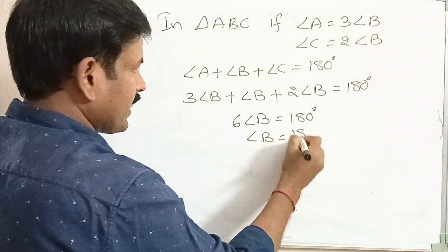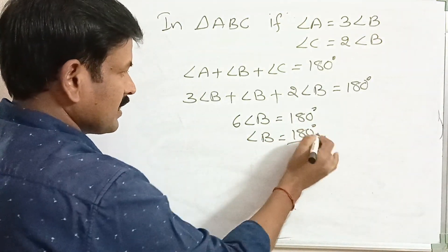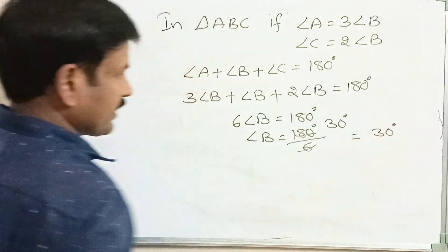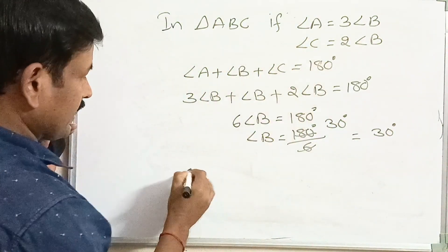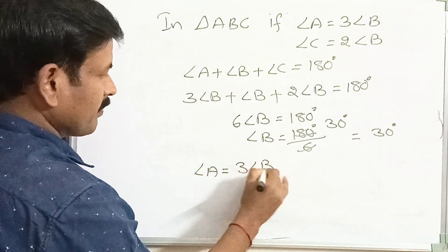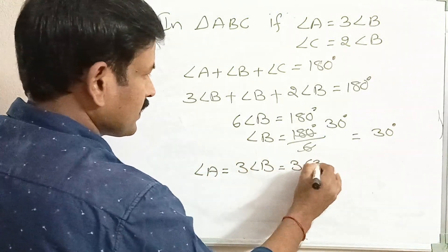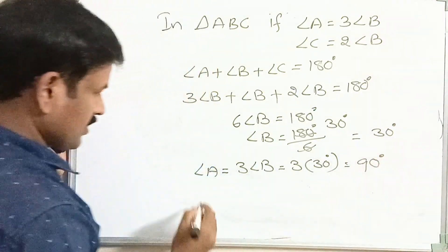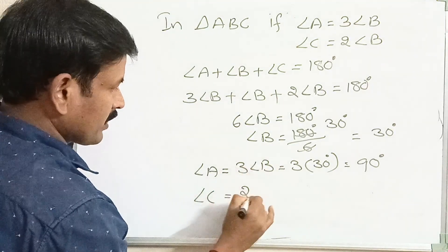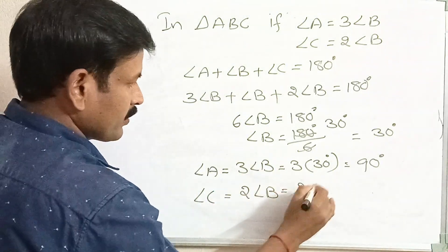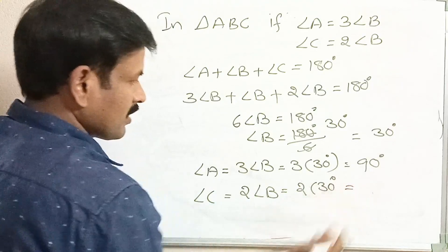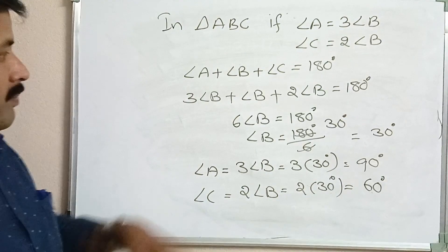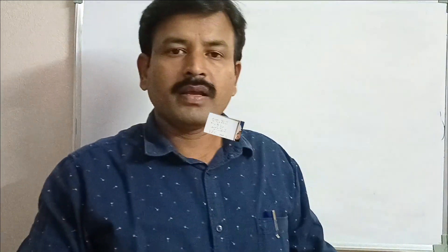Then angle B equals 180 degrees divided by 6, which is 30 degrees. Angle A equals 3 times angle B, which is 3 into 30, equaling 90 degrees. Angle C equals 2 times angle B, which is 2 into 30 degrees, equaling 60 degrees. These are the three angles of the triangle.